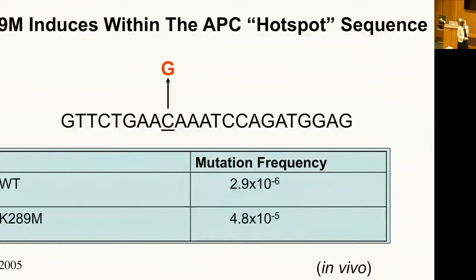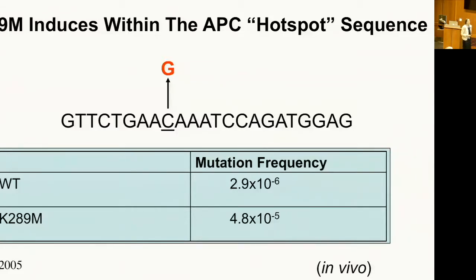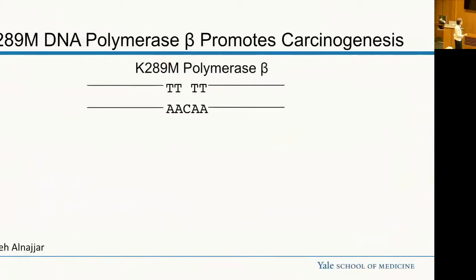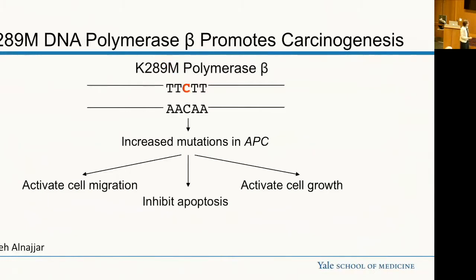What's really cool about this polymerase is that it makes mutations. In vivo, we looked at mutations made by this polymerase and found that it mutates the APC gene, which of course is a cancer gene mutated in a lot of tumors. It mutates it in the hotspot where we usually find mutations in APC. We can do this in vivo and in vitro. In vivo, this polymerase has a mutator phenotype — about 16-fold higher mutation frequency for mutations just within that hotspot sequence. We surmised that the K289M DNA polymerase puts in C opposite template C, leading to an increase in mutations in APC, which activates cell growth and leads to cancer.